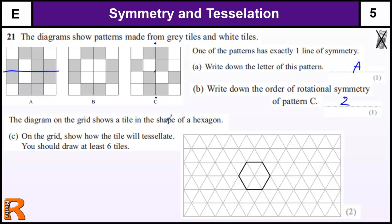The diagram on the grid shows a tile in the shape of a hexagon. On the grid show how the tile will tessellate. You must draw at least six. Quite an easy tessellation, you're just making sure there are no gaps. That's all you've got to do with tessellation, and also you've got to make sure that you have at least one place where you are going all the way around to show there are no gaps. But it does tell you that you've got to draw at least six tiles, so as long as you've filled out the grid, you don't need to do any more than six.